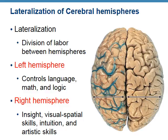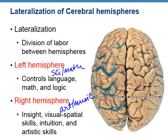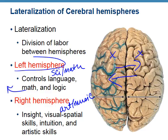Sometimes we talk about lateralization of the cerebral hemispheres — the left hemisphere is associated with science and math skills, and the right hemisphere with art and music skills. However, it's not that you're using one side more than the other. We use both sides and go back and forth. If you're calculating a math problem, your left hemisphere is working more; if you're engaging in an artistic activity, your right hemisphere is working more.